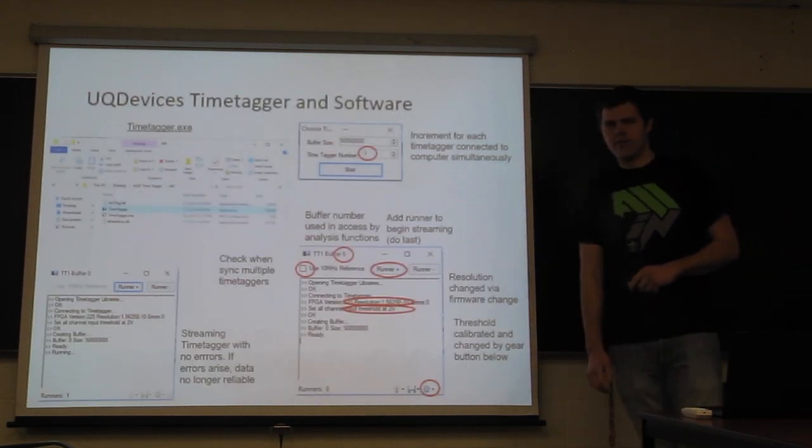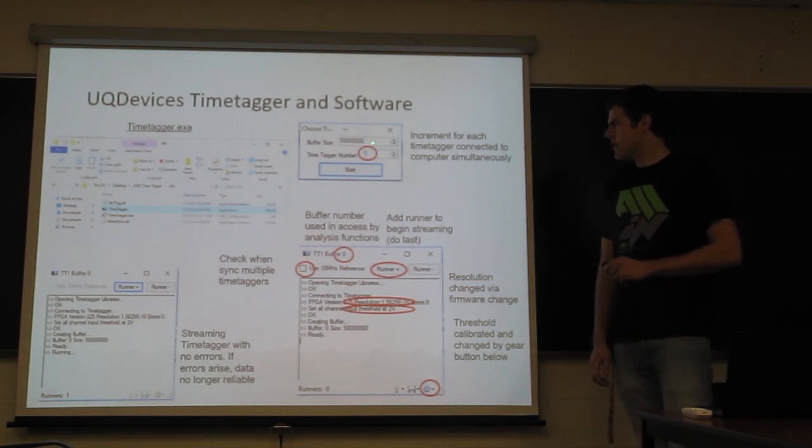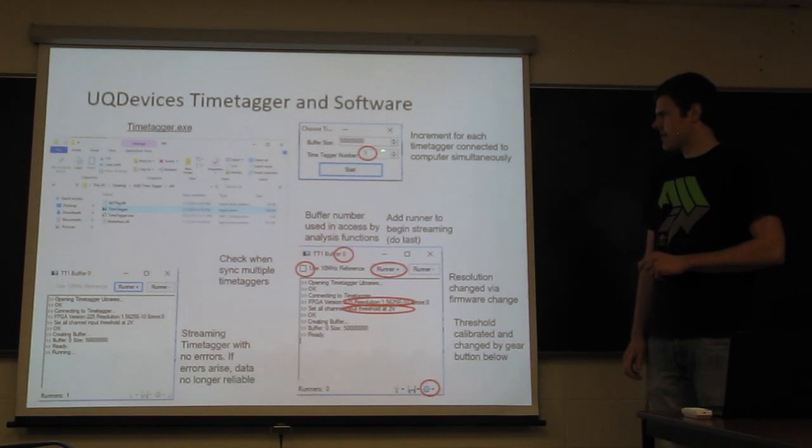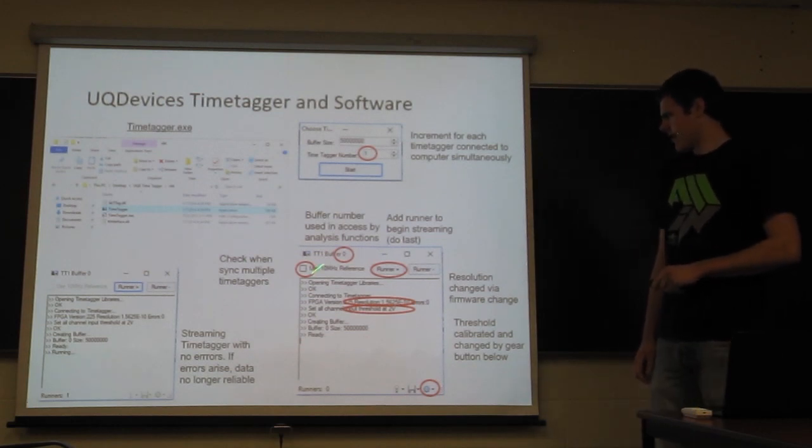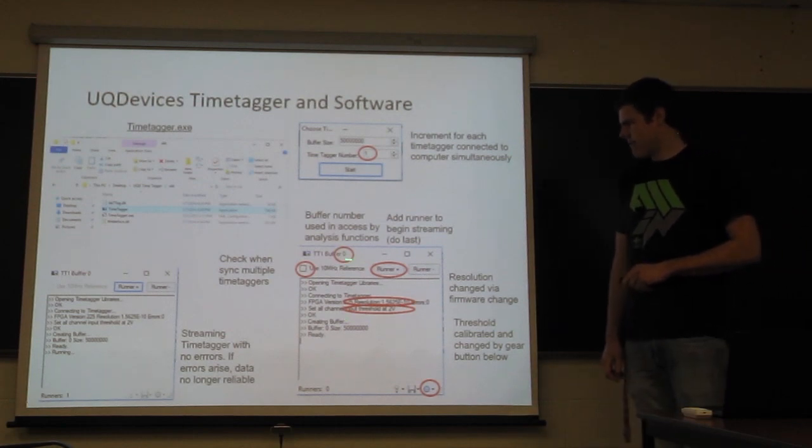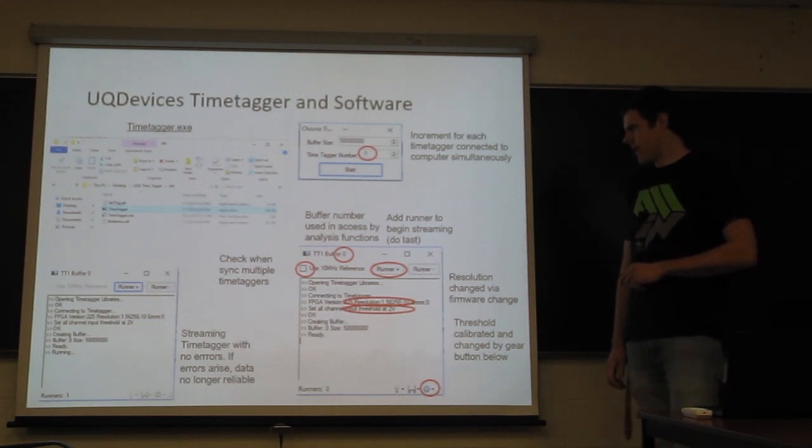So now we'll talk about how to create one of these buffers and connect to a UQD time tagger. So you need this time tagger.exe that you can get from the company. And then when you open that, you will select the right time tagger number. You'll increment this for every time tagger you connect simultaneously to the computer.